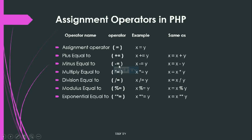Then we have minus-equals-to, which works the same as plus-equals-to. X minus-equals-to Y means the result of X minus Y is assigned to X. Similarly, we have multiplication-equals-to, division-equals-to, modulus-equals-to, and exponential-equals-to operators. Let's see practically how we can use these operators in PHP.